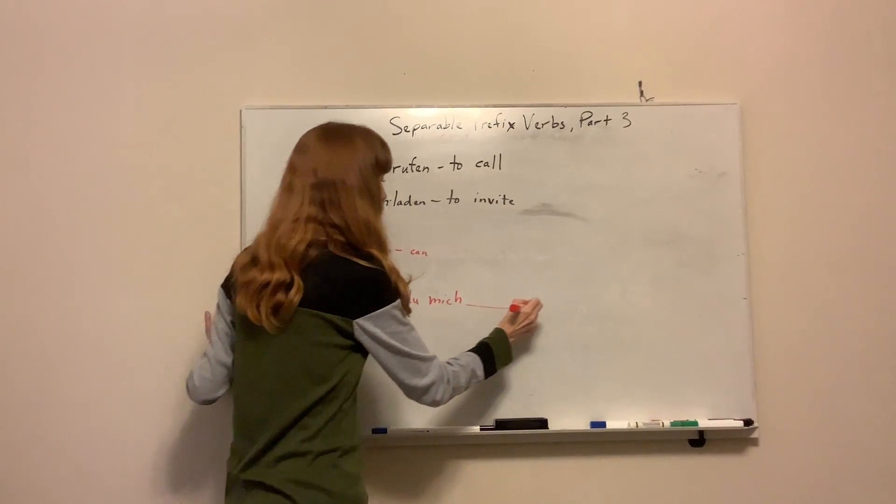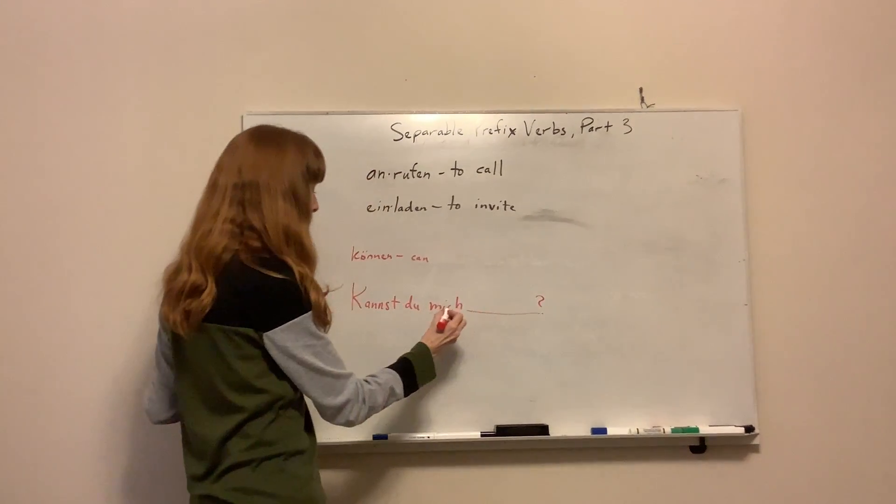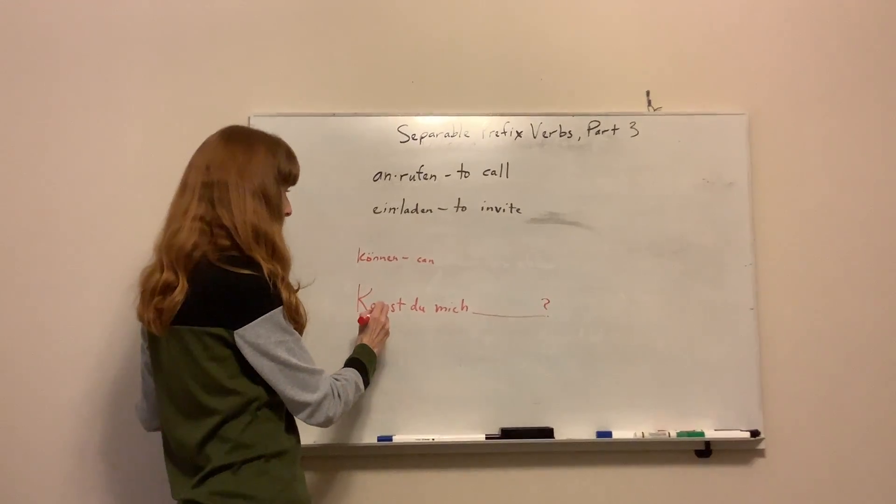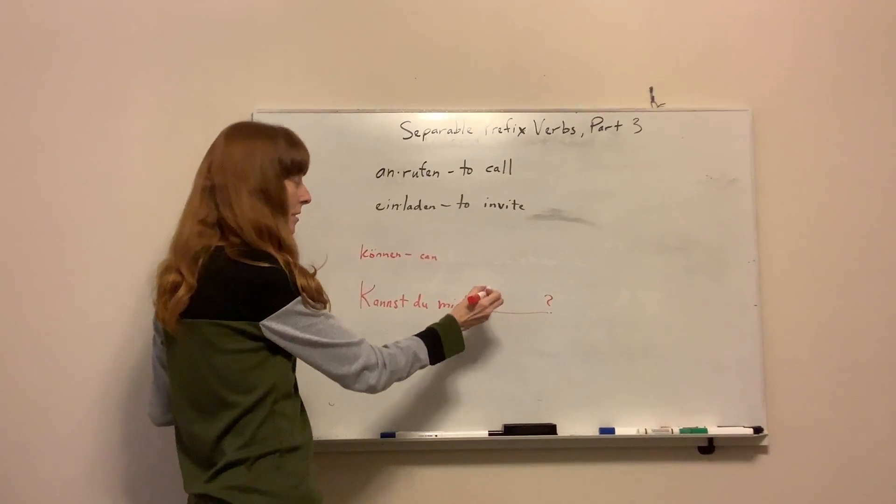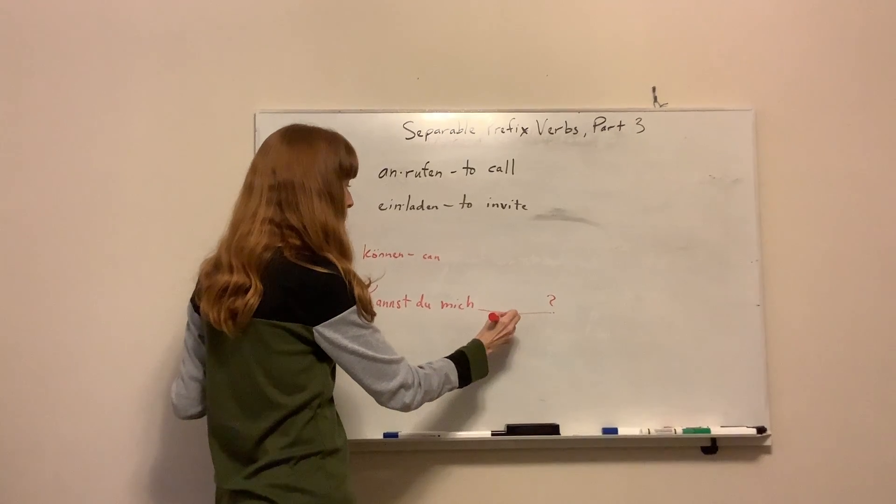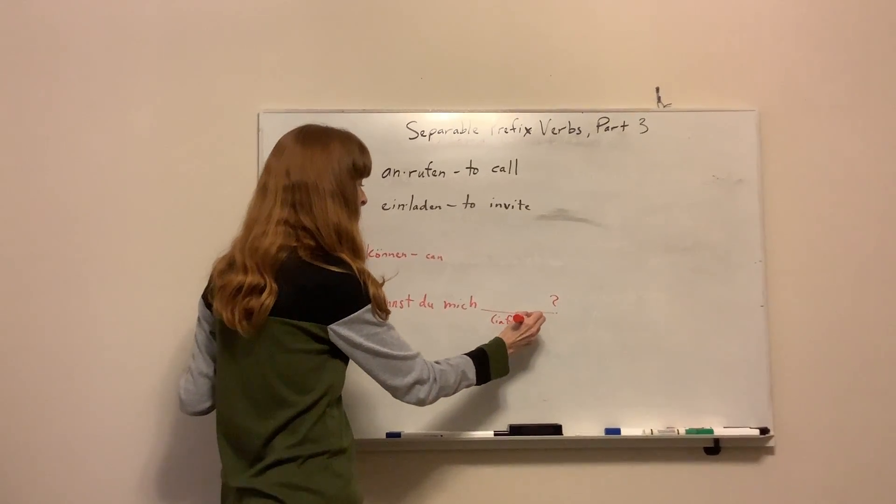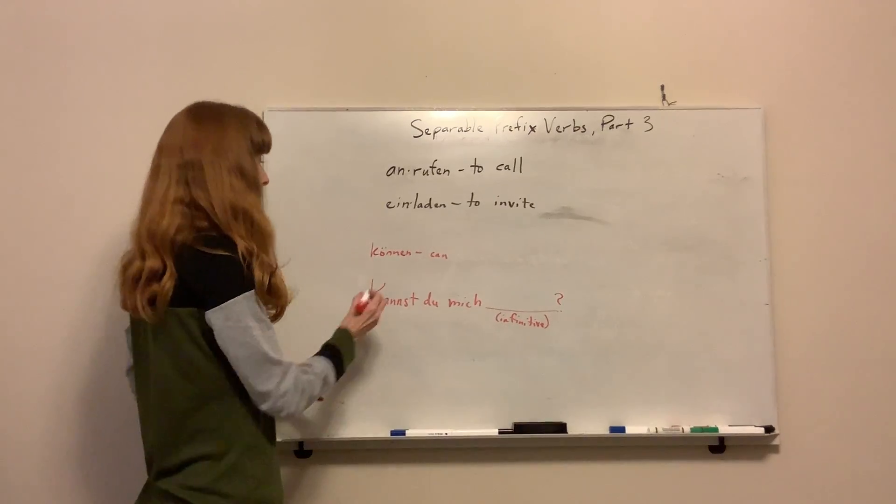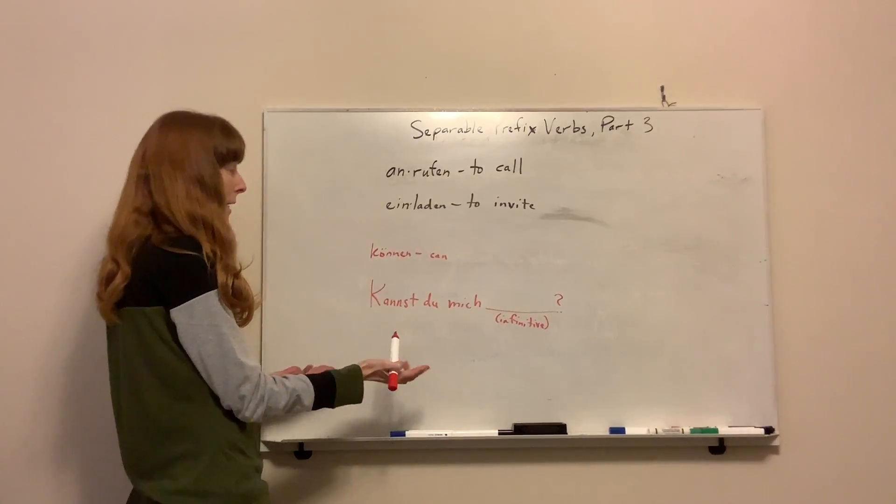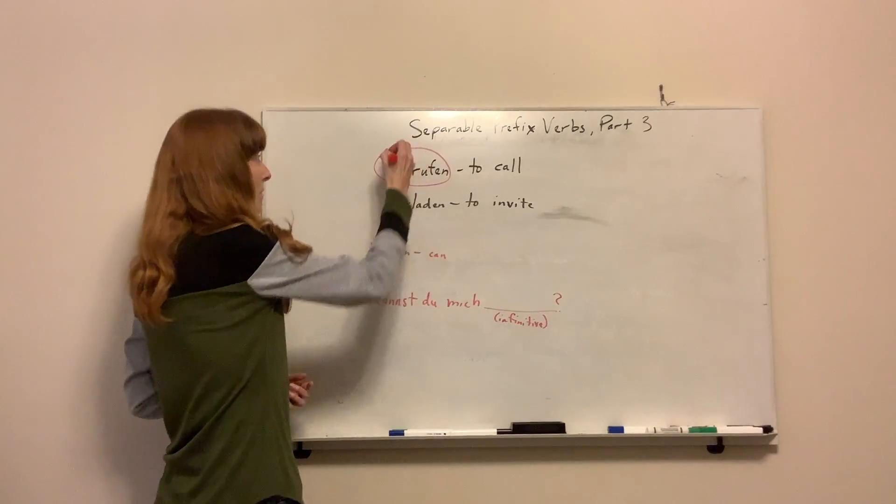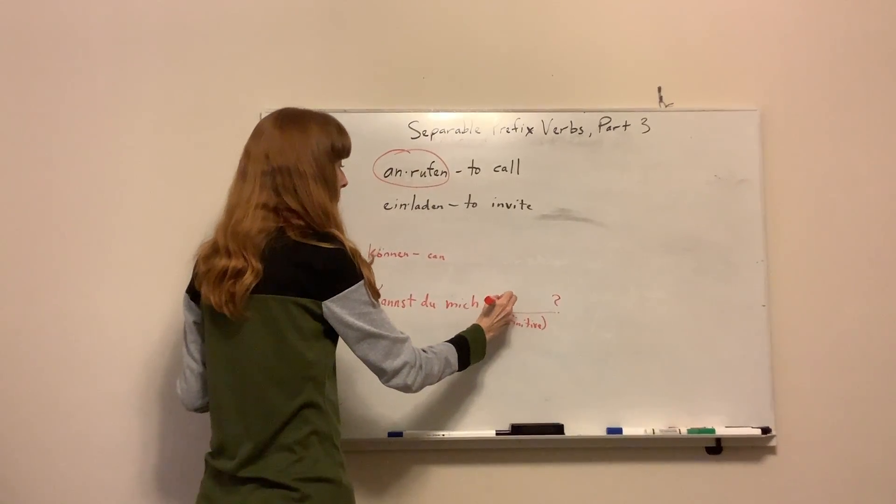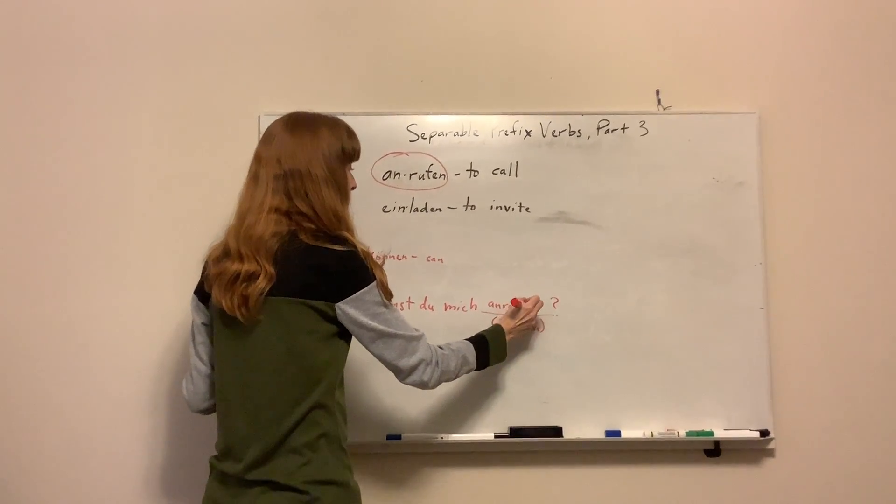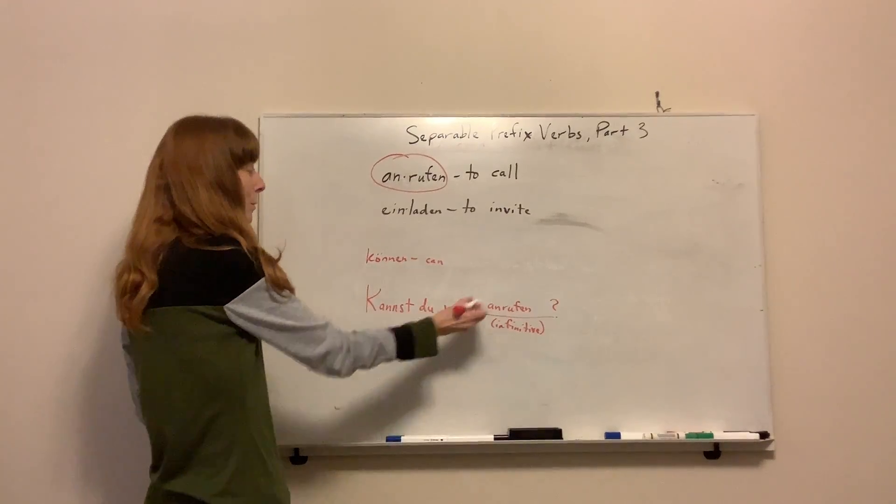Now, we know with modal verbs that normally we conjugate the verb and the other one at the end is in the infinitive. In other words, it's not conjugated. That's still going to be true here. If I wanted to say, can you call me, I would simply take the infinitive and just put it down here. I don't have to do a thing to it. Kannst du mich anrufen?